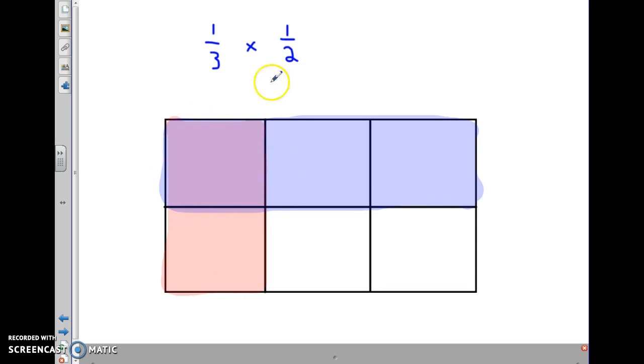So, I have this part here, 1, out of the total amount of areas that I've separated into through my lines here. So, I have 1 that's purple out of 1, 2, 3, 4, 5, 6. So, that means that 1 third times 1 half equals 1 sixth. 1 third of 1 half, or 1 half of 1 third, would give you 1 sixth.